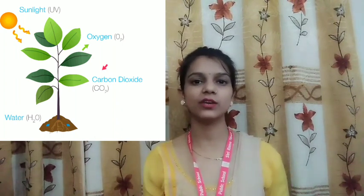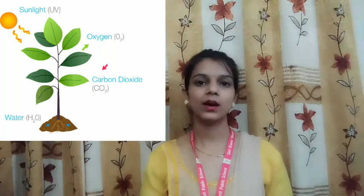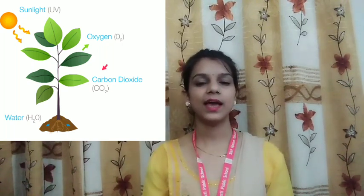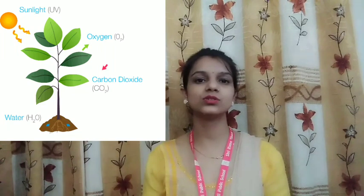A plant makes food with the help of light, getting all the ingredients together. A plant gets sunlight from the sun. Plants get water and minerals with the help of roots. Roots take water and minerals from soil and give it to the stem. Then the stem passes it to the leaves.